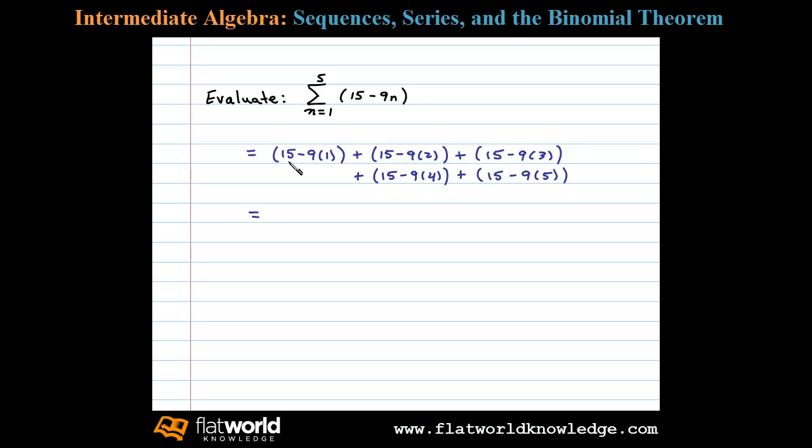Now at this point we simplify: 15 minus 9 is 6, plus 15 minus 18 here is negative 3, plus 15 minus 27 is negative 12.